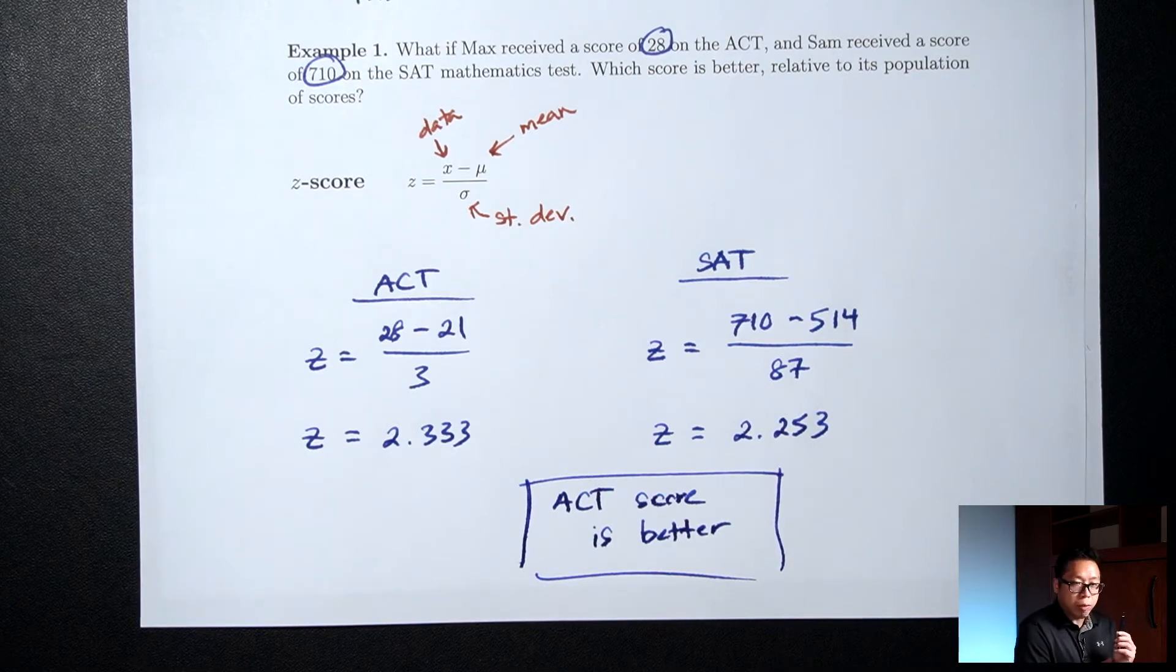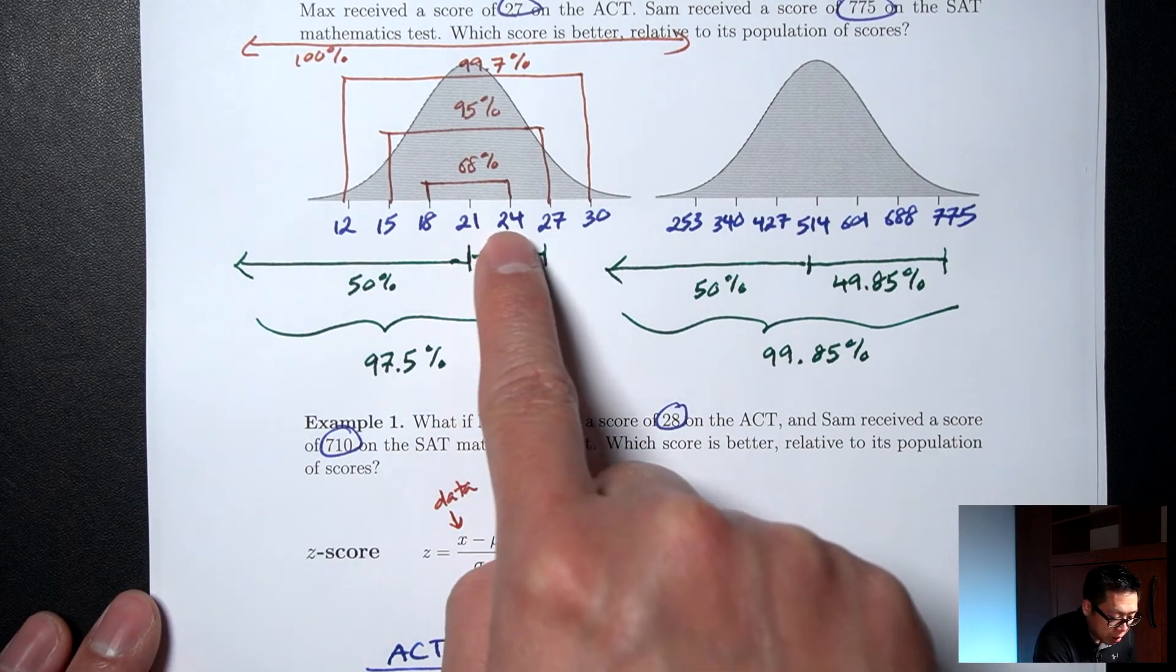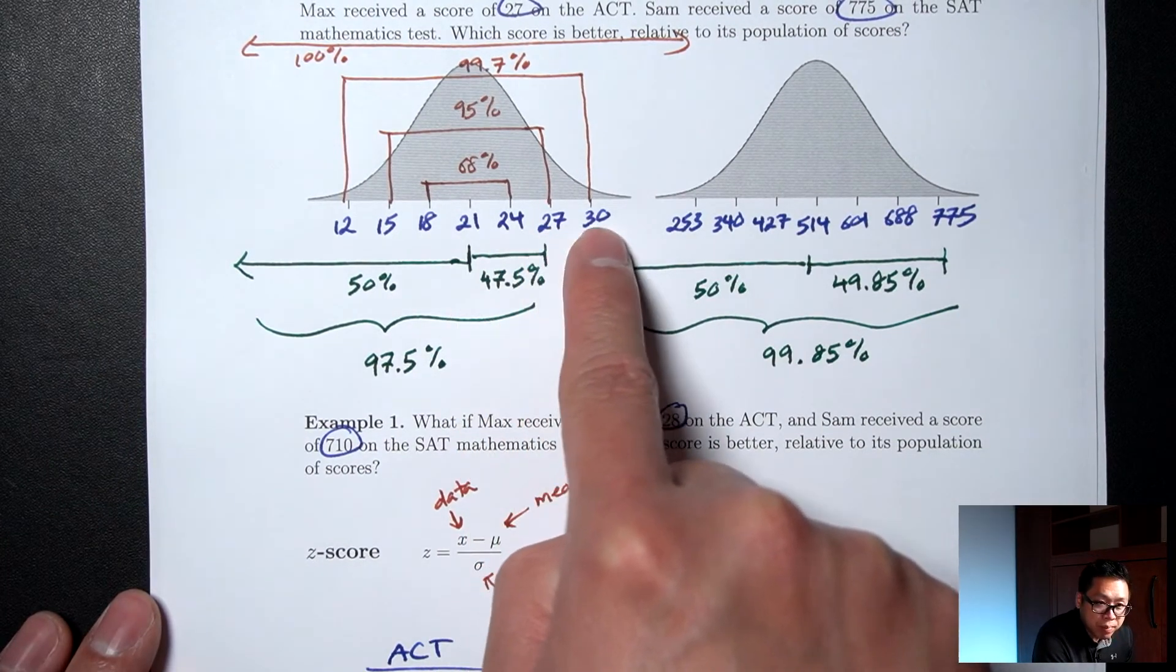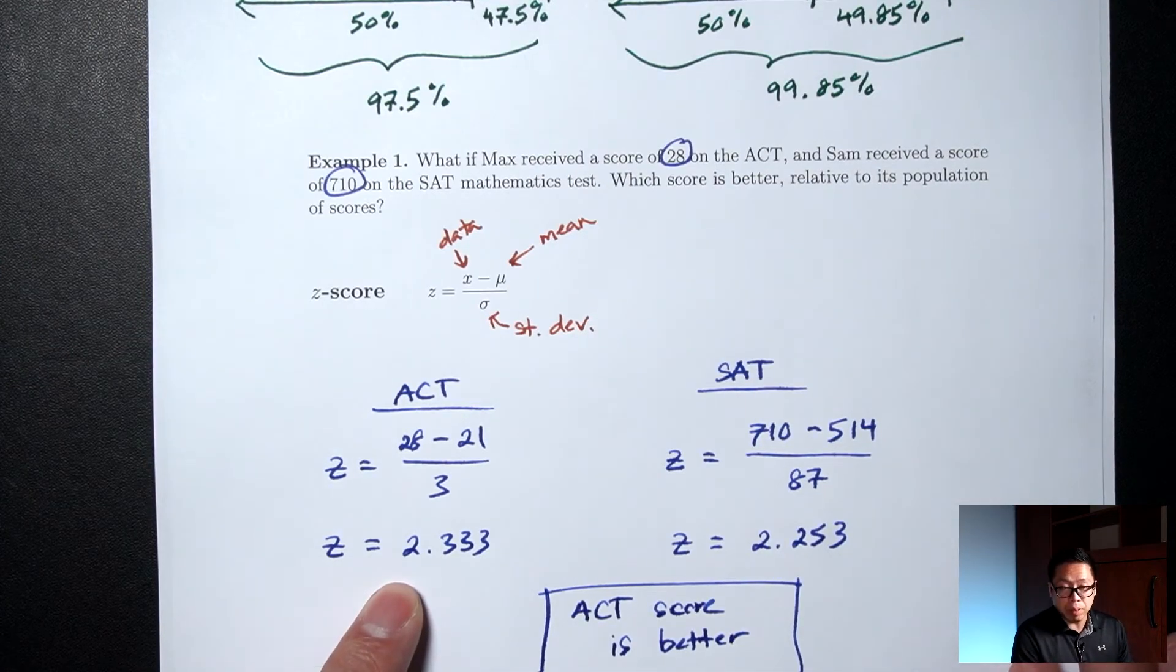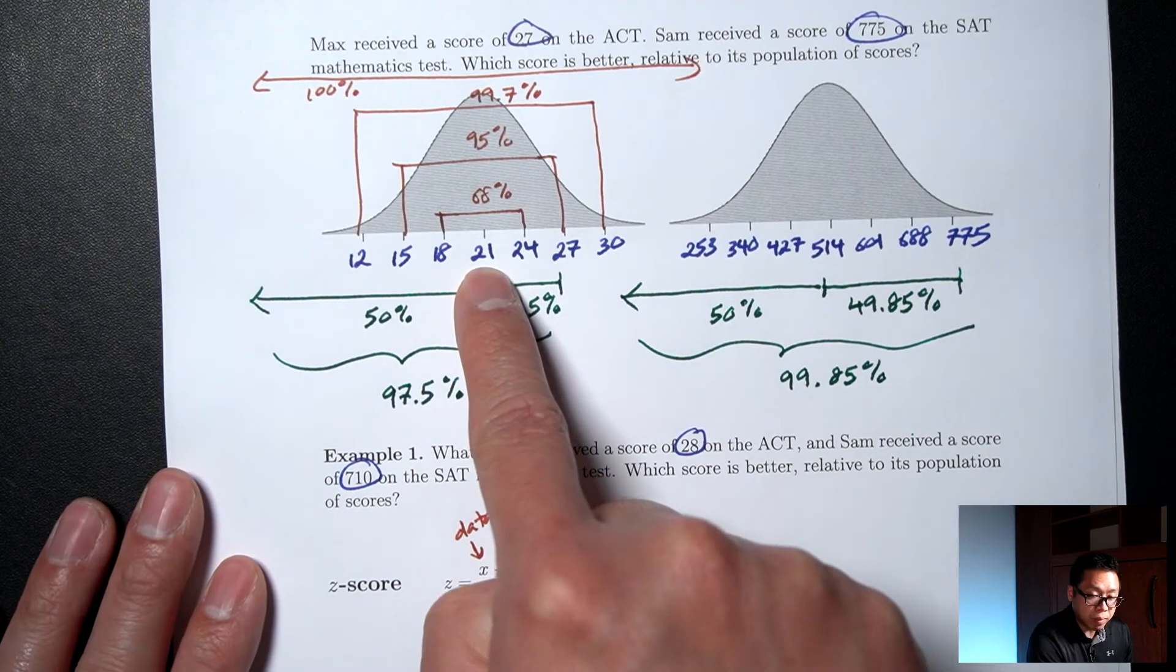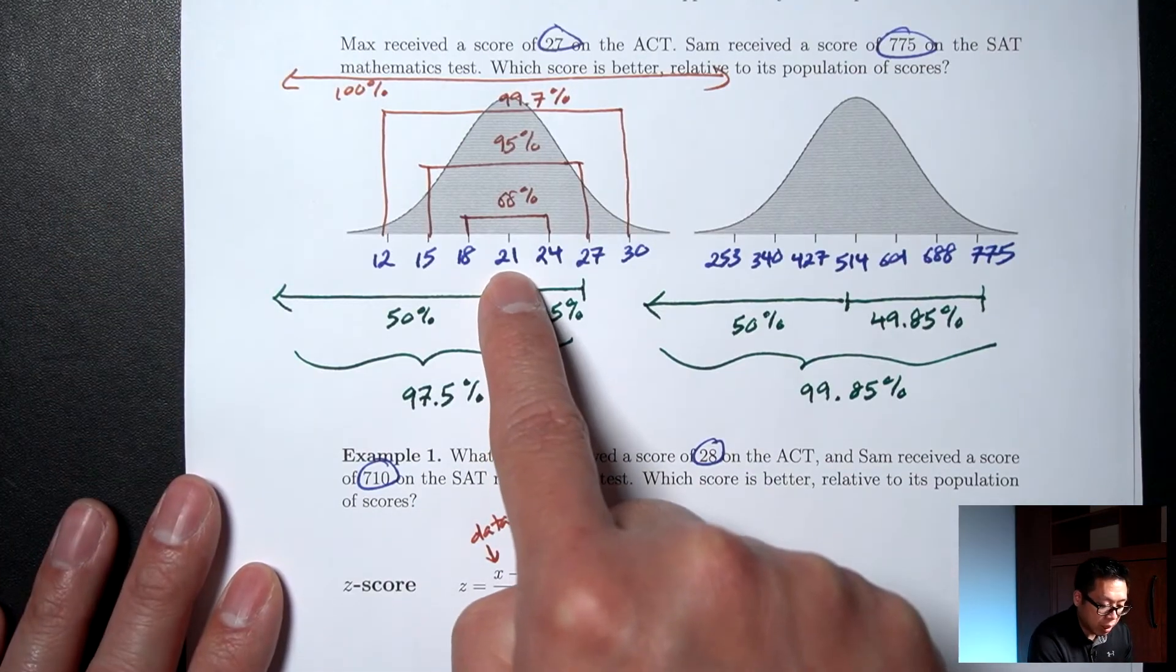So what does this 2.333 actually mean? Well, remember we said that 28 was somewhere between 2 up and 3 up. This is saying that it's exactly 2.333 steps above the middle. In other words, it's exactly 2.333 standard deviations above the mean.